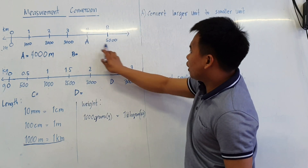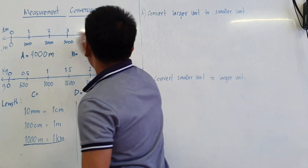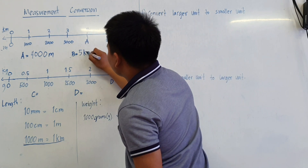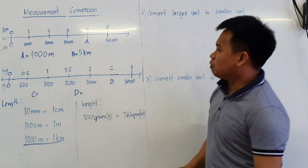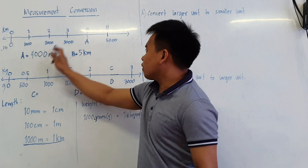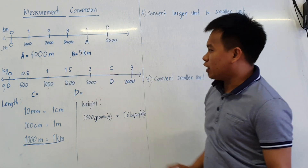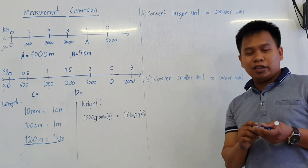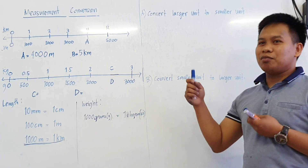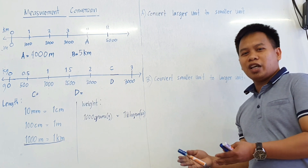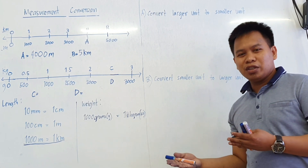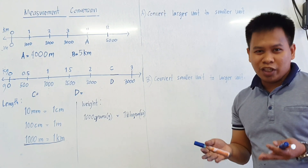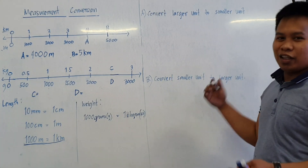Since this is 4,000 and this is 5,000, this one is 5 kilometers. So that is the answer — these are equivalent. And we'll also learn how to convert from smaller unit to bigger unit and from bigger unit to smaller unit. So what operations are we going to use? We will learn that later.